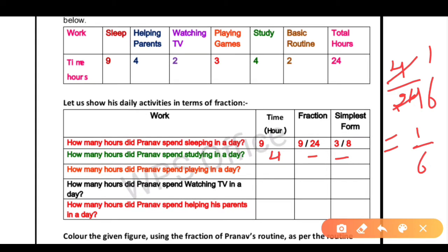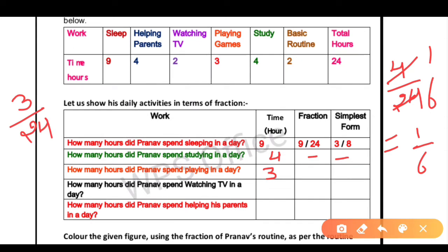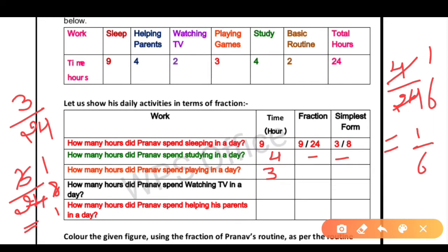How many hours did Pranav spend playing in a day? He plays 3 hours. So the fraction is 3 by 24. When we simplify 3/24, we divide both by 3, and what we get is 1 by 8. The answer is 1 by 8. We write 1 by 8 in the last box.